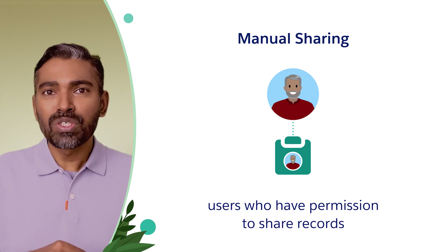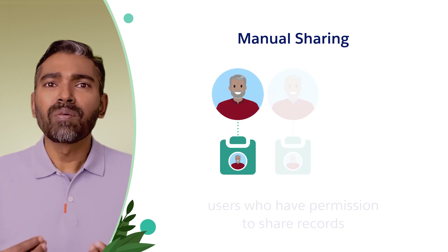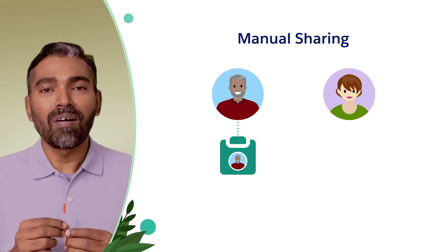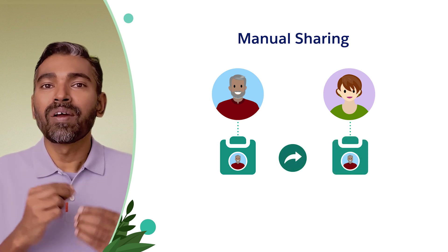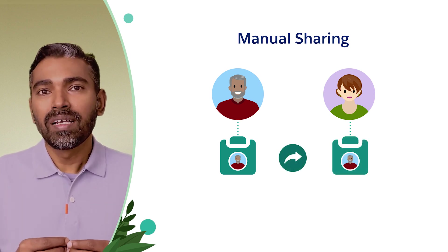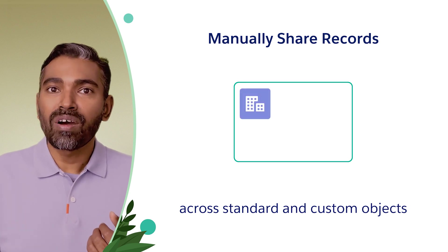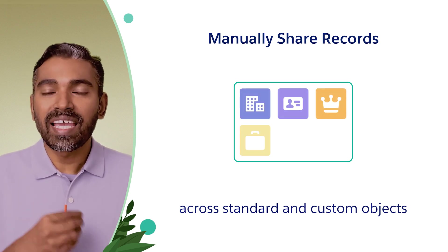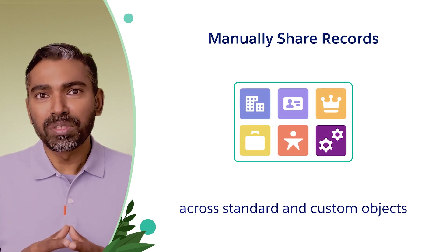When users have those manual sharing privileges, what they would do is simply click the Sharing button in the record and then choose to share records with users. Using manual sharing, you can share account records, contact records, opportunities, cases, leads, and any custom objects.